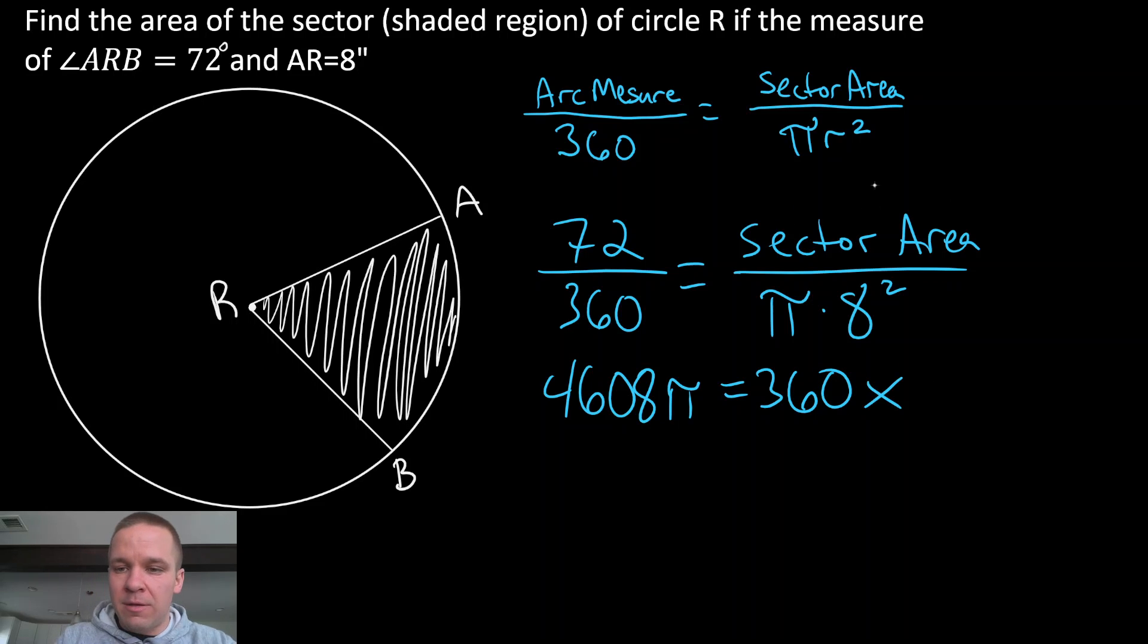So that's gonna be x, since that's what we're solving for. So how am I gonna solve for x here? Well, I'm gonna divide by 360. So if I do that, divide by 360 here, and we end up with 12.8 when we do 4,608 divided by 36.